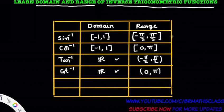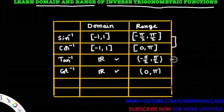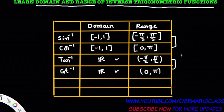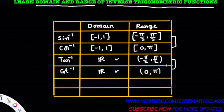There is a trick to remember: the range of sine inverse and cosine inverse are closed intervals, while the range of tan inverse and cot inverse are open intervals. Range of sine inverse is closed interval minus pi by 2 comma pi by 2, range of tan inverse is open interval minus pi by 2 comma pi by 2. Range of cosine inverse is closed interval 0 comma pi, range of cot inverse is open interval 0 comma pi.